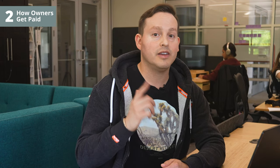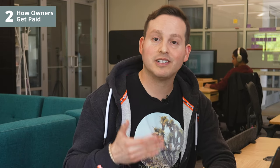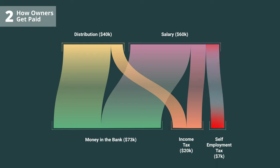So while distributions are tax-advantaged because you don't pay employment taxes on them, you are required to pay yourself a reasonable salary before taking distributions. Additionally, you can't take an inappropriately small salary in order to collect more in distributions. As you can see, many LLCs and corporations may benefit from the tax advantages offered by an S-corp, but they must be sure to follow the rules outlined by the IRS.